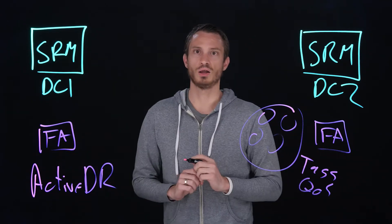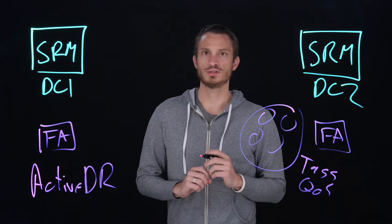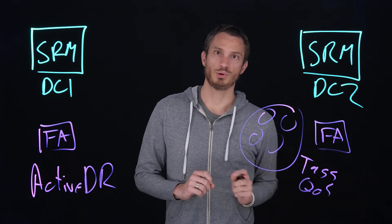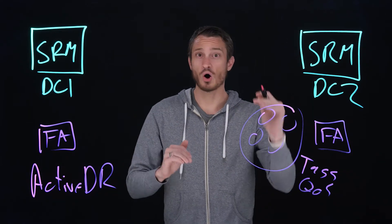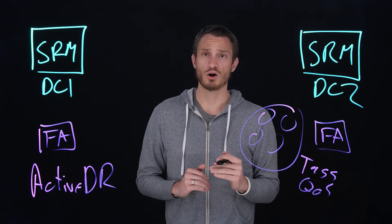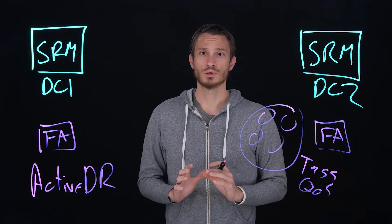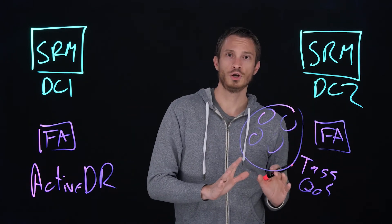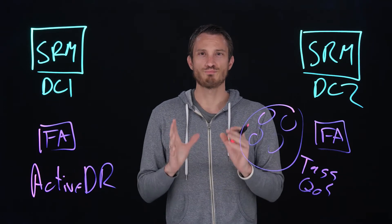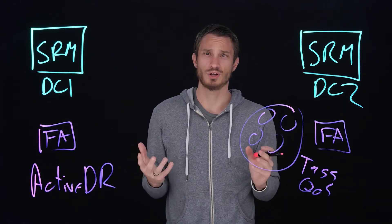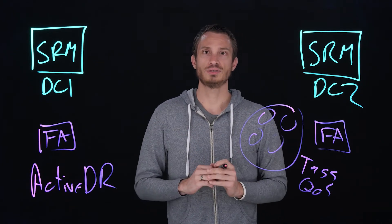When you tag a volume, that tag appears on that volume on the other side. When you configure a QoS limit, that QoS configuration is also replicated. When you assign it to a snapshot policy, that policy and all the point-in-times that are created and retained appear on that other side. When you do a failover, your environment is exactly the way it was on the original side. It's not just about the data, but everything that comes along with it — which is also pretty important. Active DR makes this simple.